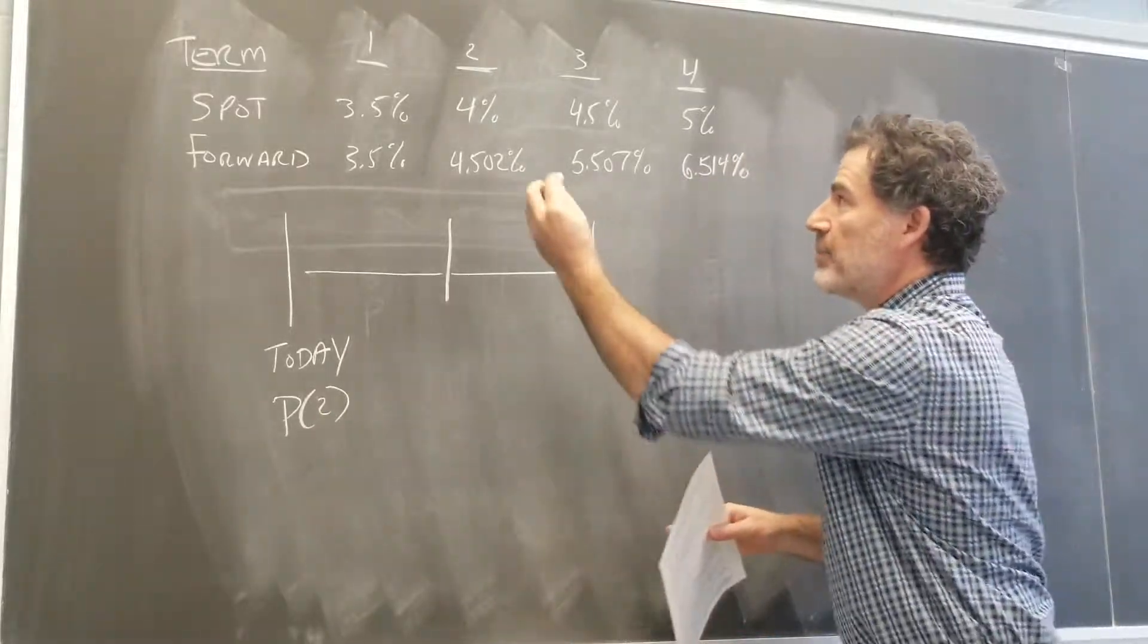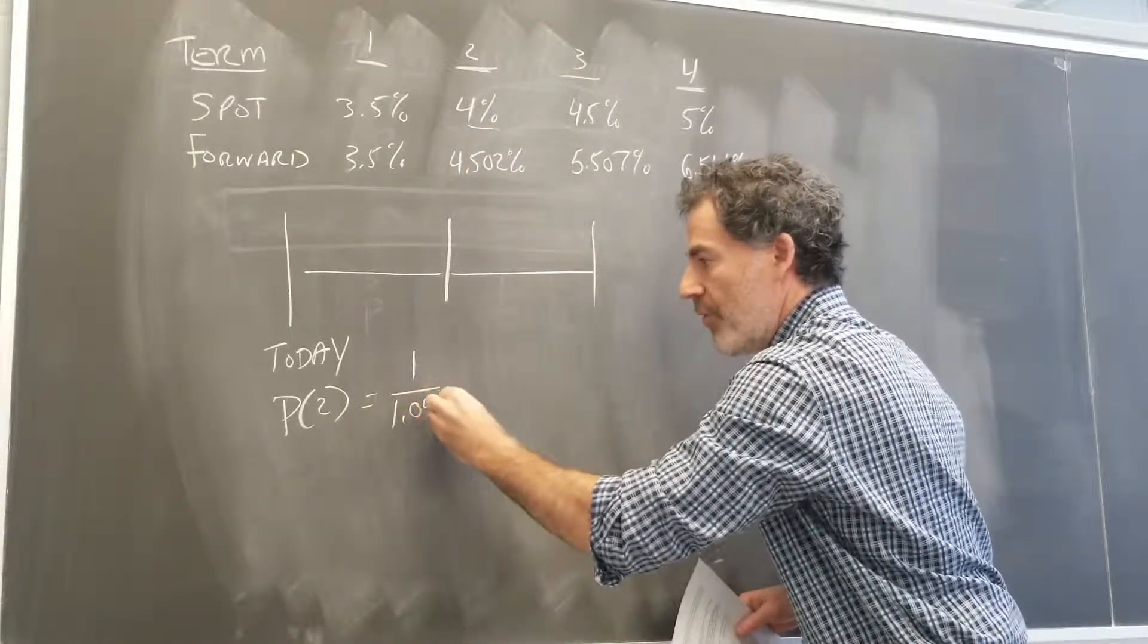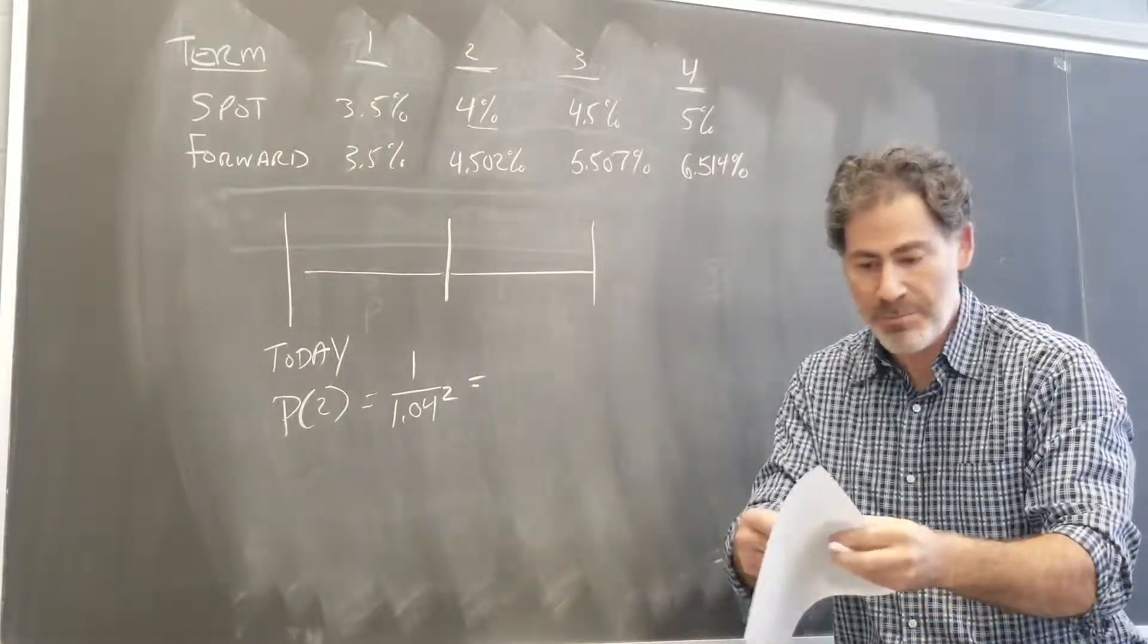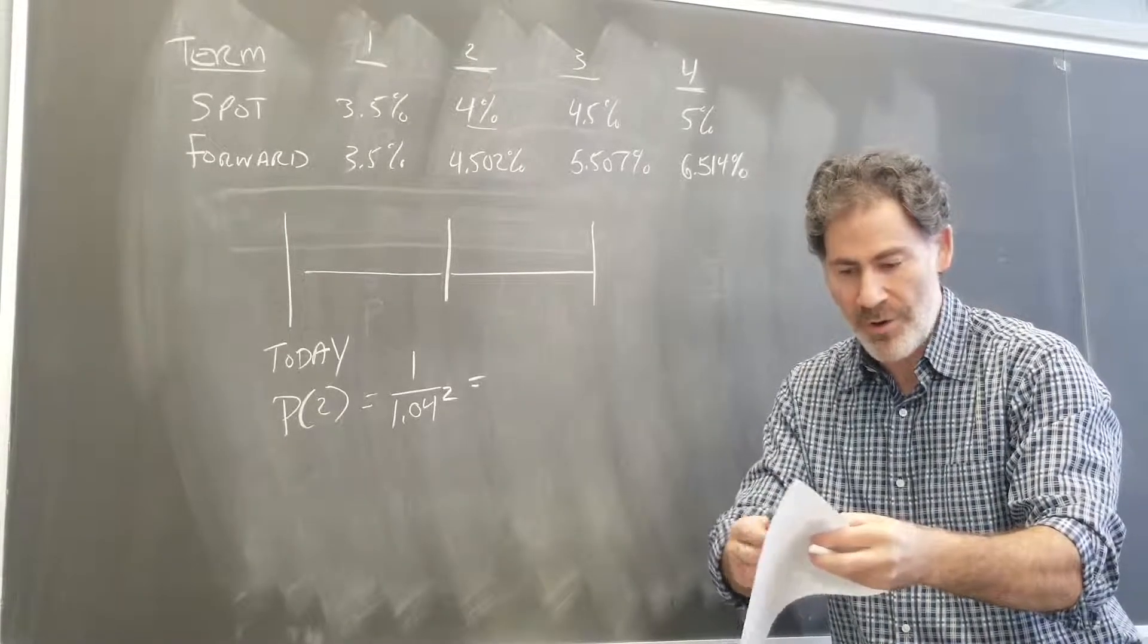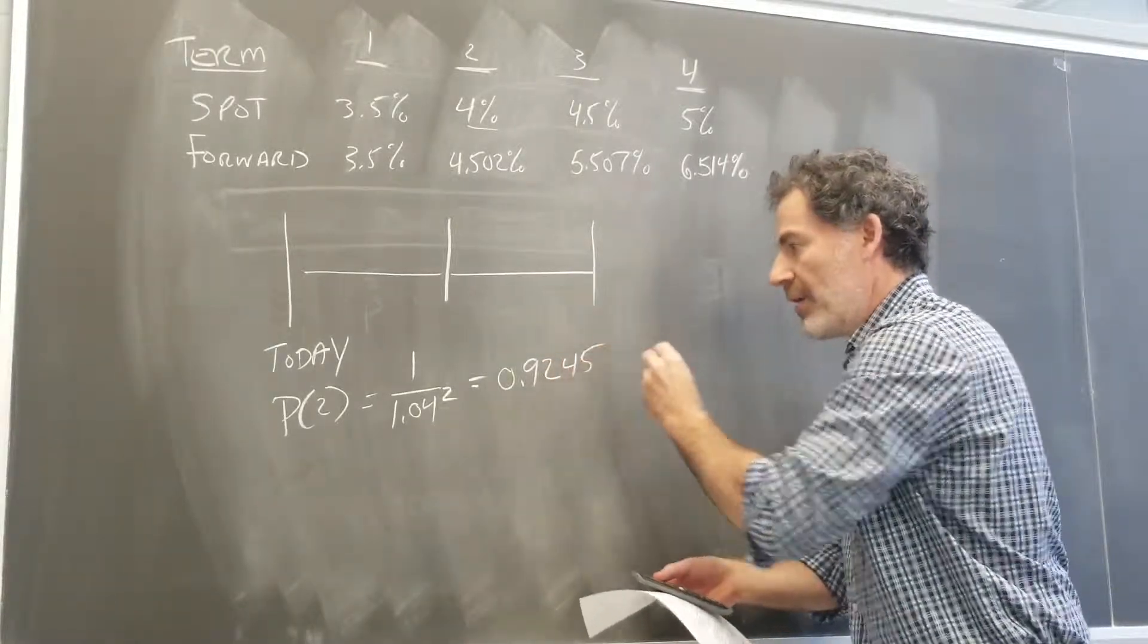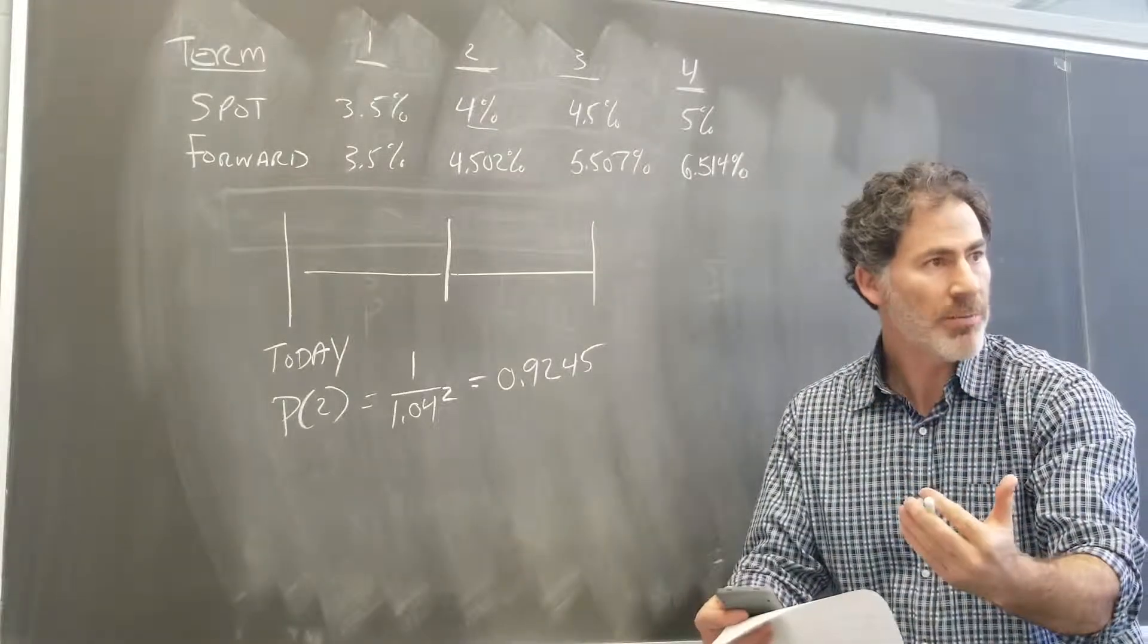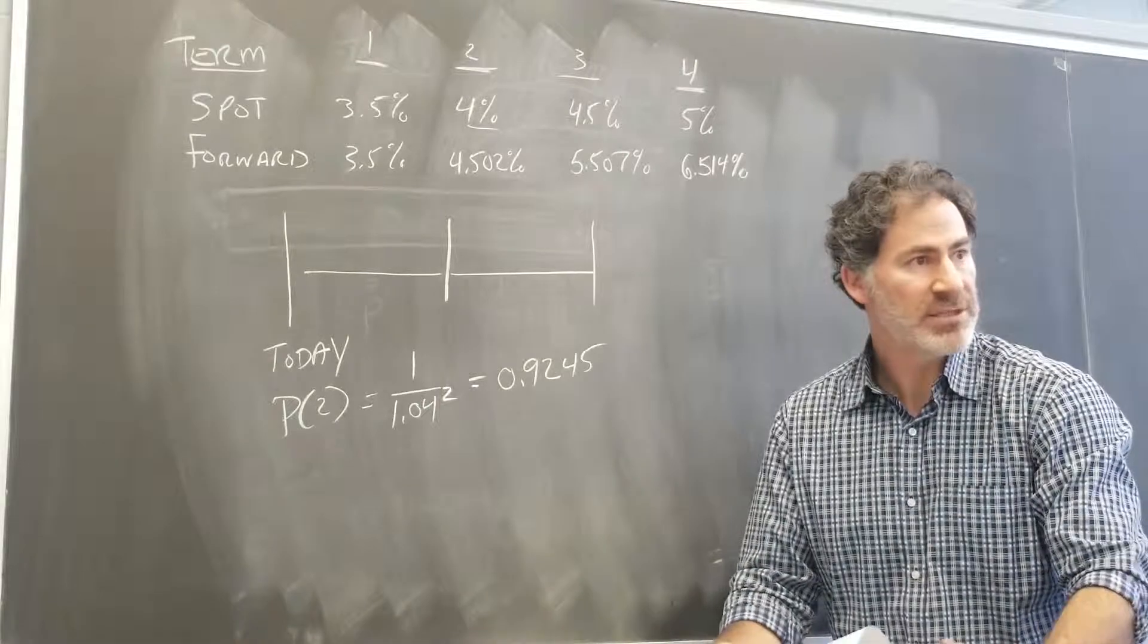Remember, I came up to the spot and this was 1 over 1.04 squared. And this will give me the price of this bond today. 1.04 squared, 1 over. So this is 0.9245. And we've got more decimals. So remember, we're dealing with a $1 par value. This could be $92.45. All right.